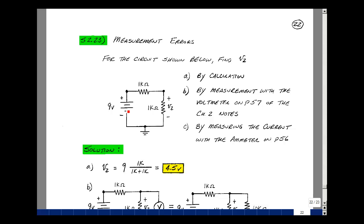Given this circuit with a 9-volt source, a 1k and a 1k resistor, let's calculate the voltage across the second 1k by calculation. Let's also do the same by measurement using the equivalent circuit of the voltmeter we had on page 57 of the Chapter 2 notes. Let's repeat that one more time using an ammeter that we had a model for on page 56. This will show some of the problems with measurement.